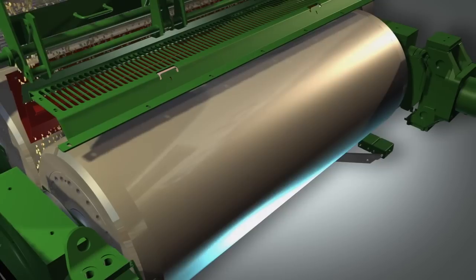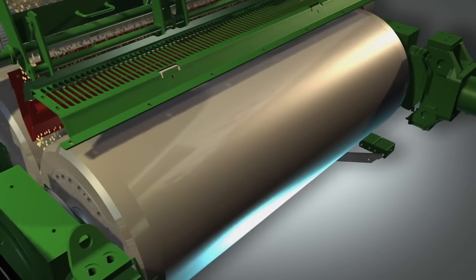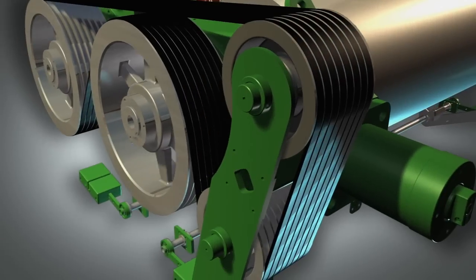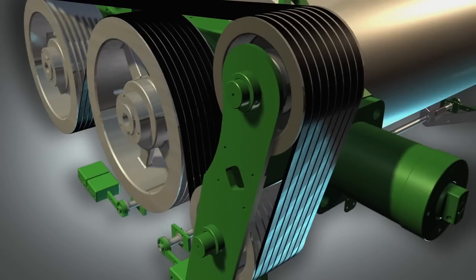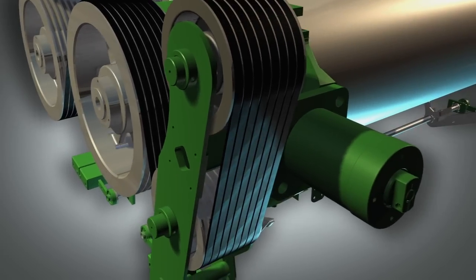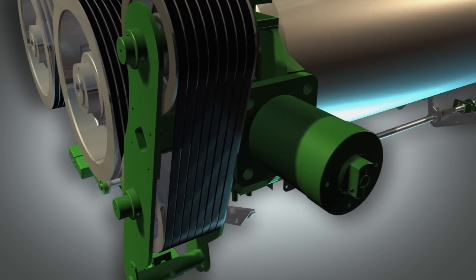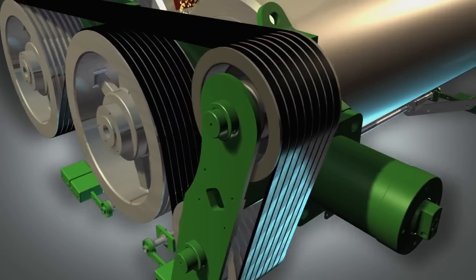Several different roll materials are available, including centrifugally cast chilled iron and indefinite chill rolls. The inter-roll drive features double-sided V-belts for quiet, efficient operation. Belt tension is precisely maintained by hydraulic pressure for maximum belt life and consistent performance.